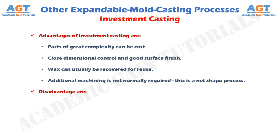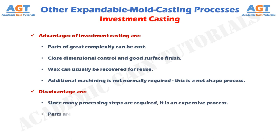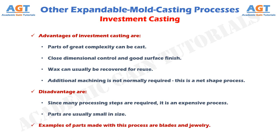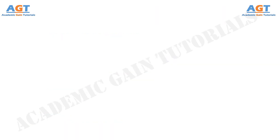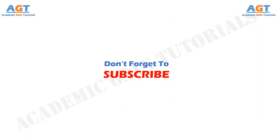Disadvantages are: since many processing steps are required, it is an expensive process, and parts are usually small in size. Examples of parts made with this process are blades and jewelry. So, we have studied precision investment casting, or lost wax casting process, which is one of the expandable mold casting processes other than sand casting. Thank you.